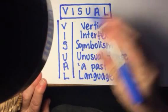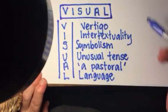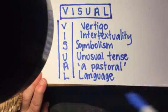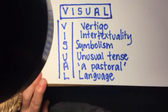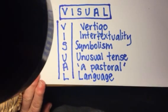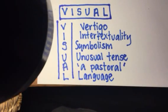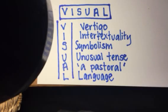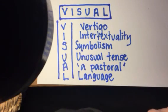Wherever you go, if you have this up it can be really, really helpful. And when you're nervous or anxious before the exam, you can just think: Visual — Vertigo, Intertextuality, Symbolism, Unusual Tense, A Pastoral, and Language.